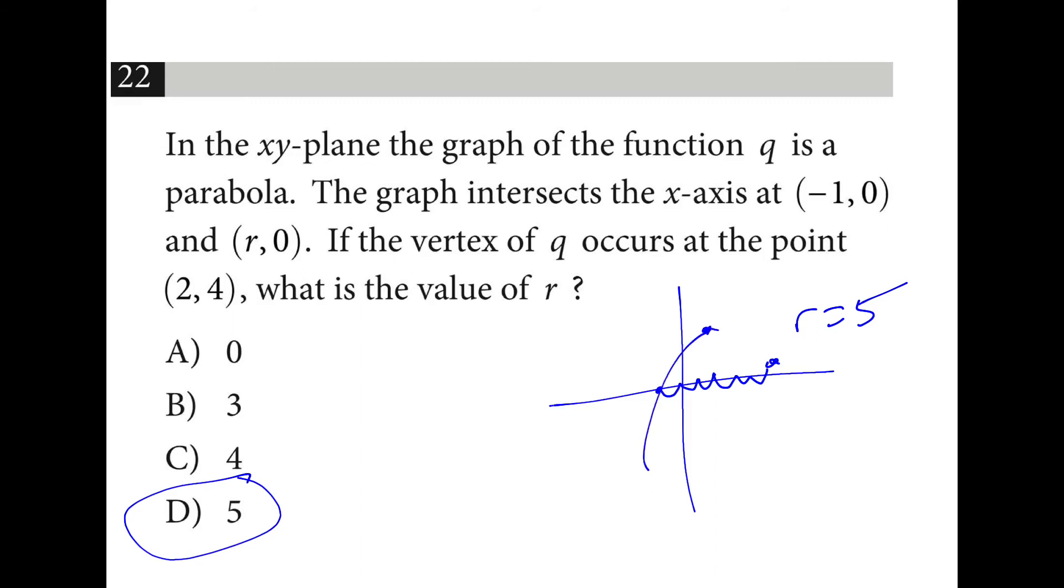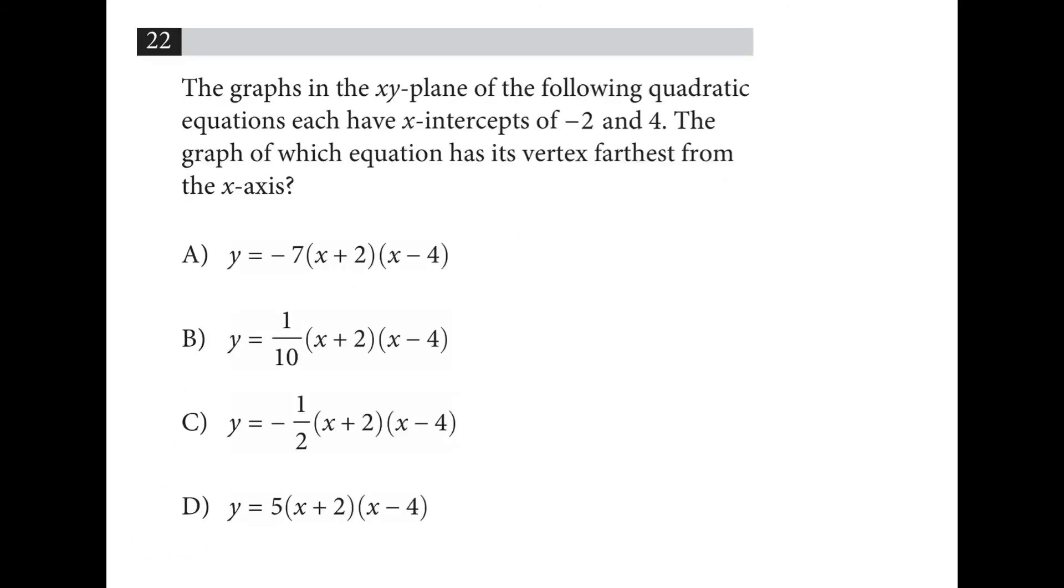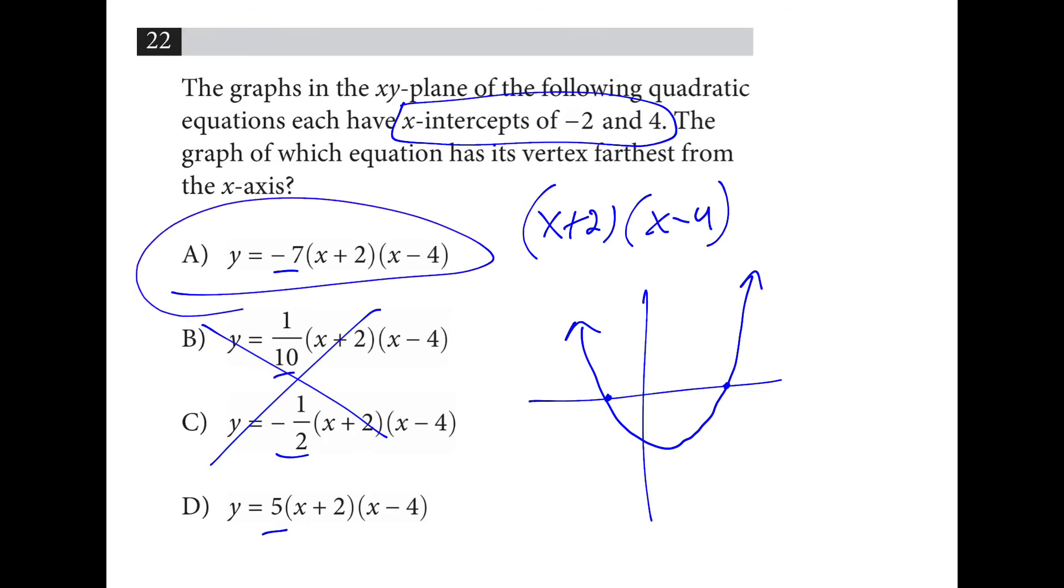And the graph would look something like this. If we have x-intercepts of negative 2 and 4, that means x plus 2 and x minus 4 are factors. So our graph is going to look something like this. It entirely depends upon the scale factor. It's going to open up. Well, I guess we don't know that definitively, but if it's a fraction, it's going to flatten out. We want the largest number possible, and then the vertex will be farther away from the x-axis. So that's here, a.